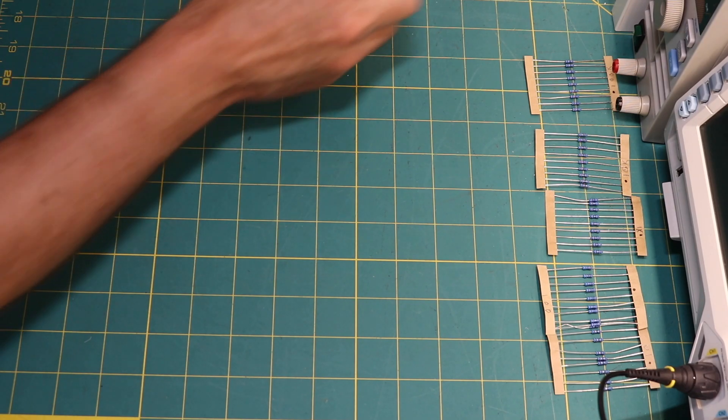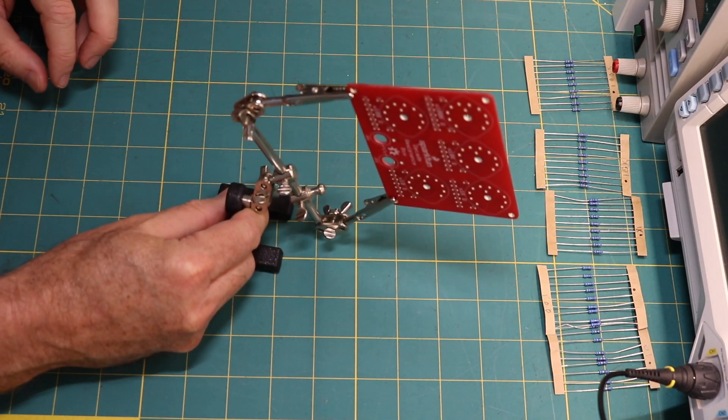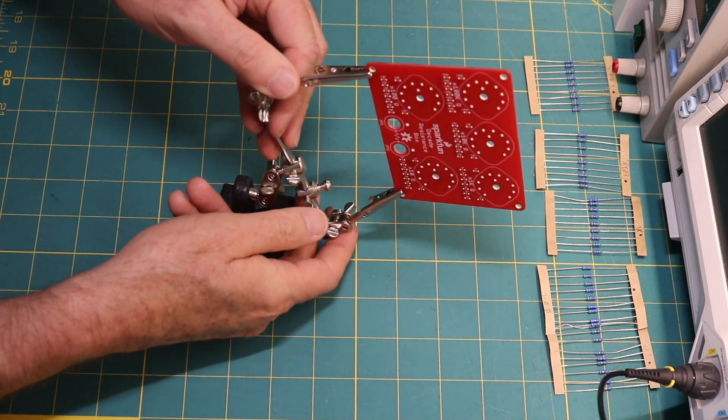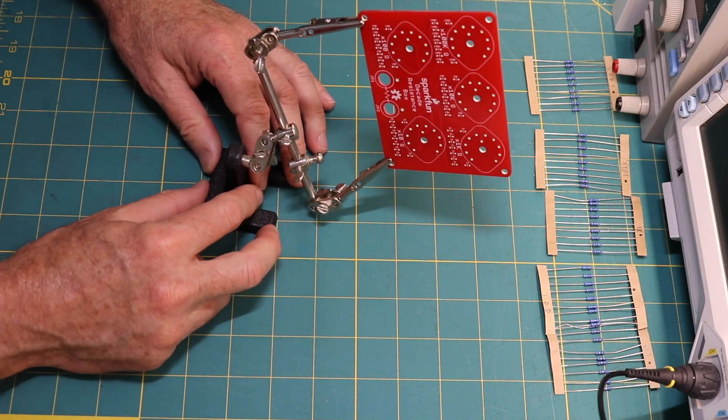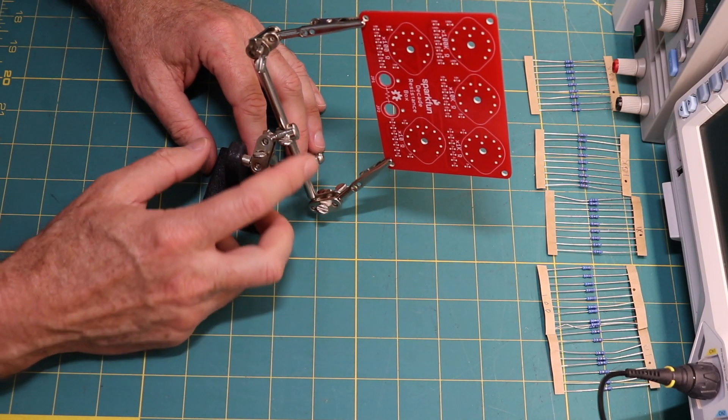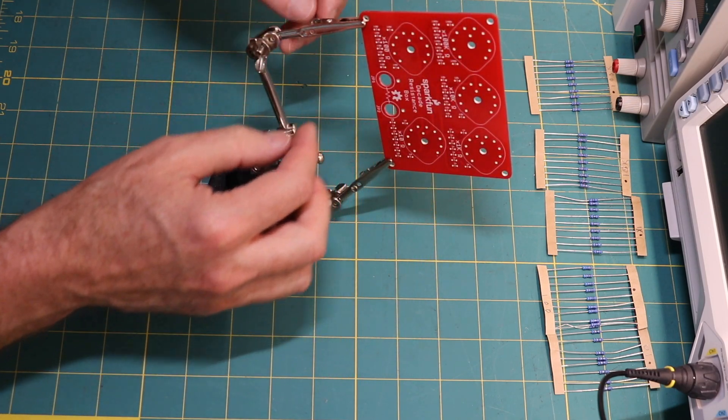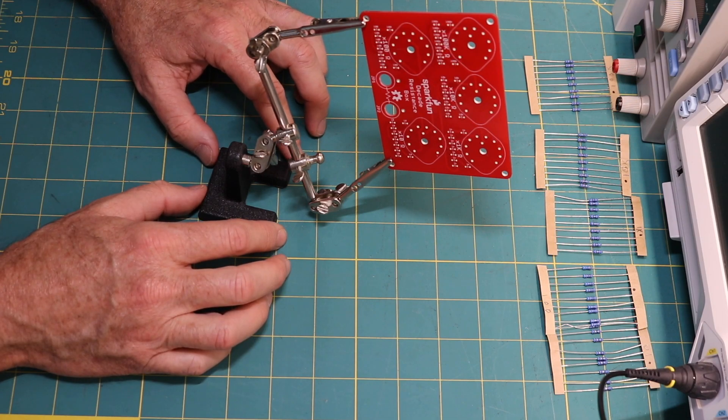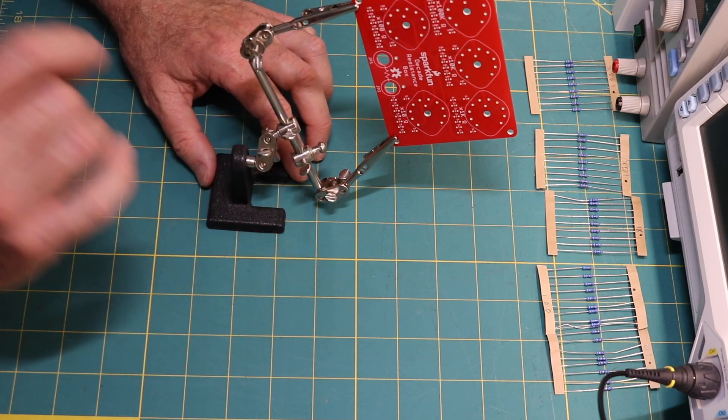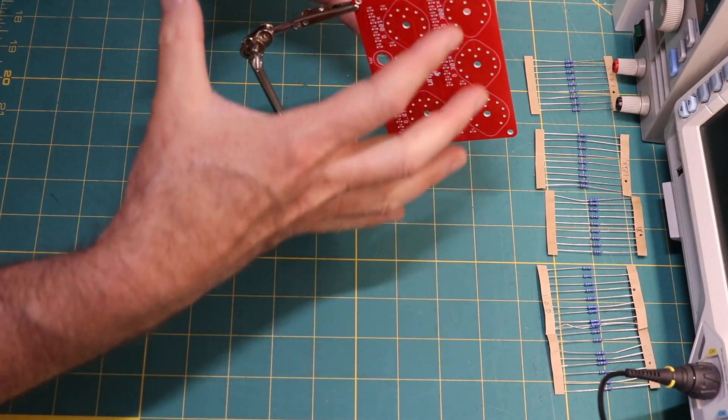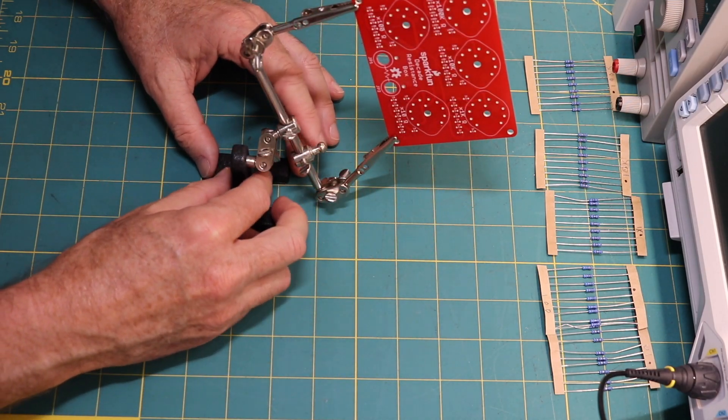So the next step, I've got my circuit board in a little helper here to help me put all of them in the right place and then get them soldered. What I'm going to do now is I'm just going to put you on fast forward and we're going to put this whole thing together.